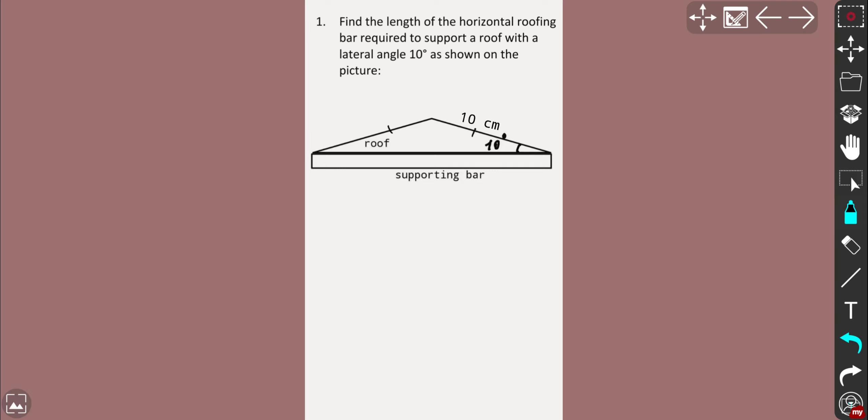You need to find the length of the horizontal roofing bar required to support a roof. Here is the roof with the lateral angle 10 degrees. It's there as shown on the picture and you also have the length of one half of your roof, which is 10 centimeters.